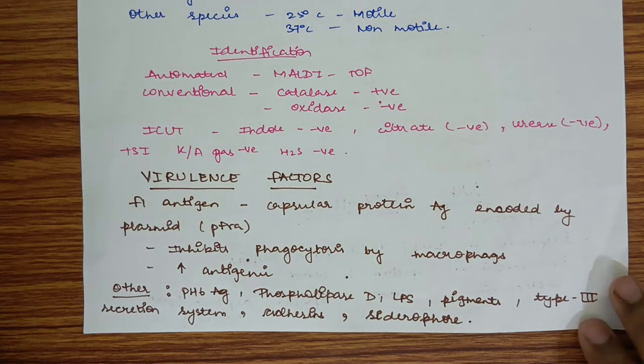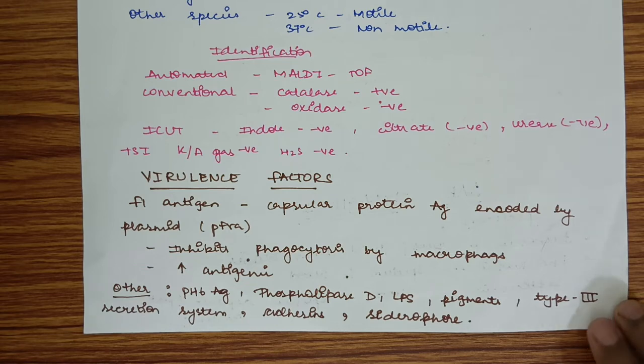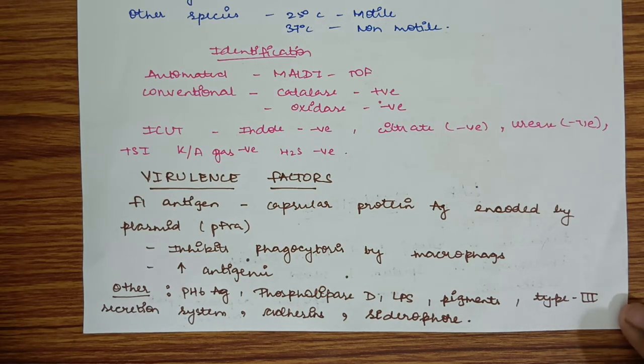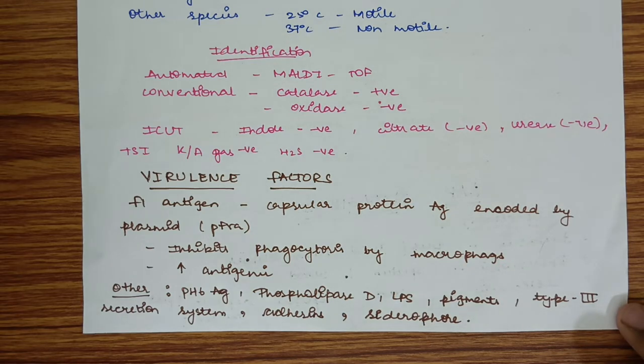Before discussing other methods, we will see virulence factors of Yersinia pestis. Virulence factors include F1 antigen, a capsular protein antigen encoded by plasmid pFRA. It inhibits phagocytosis by macrophages and is antigenic. Other virulence factors include pH 6 antigen, phospholipase D, lipopolysaccharide, pigments, type 3 secretion system, adhesins, and siderophore.